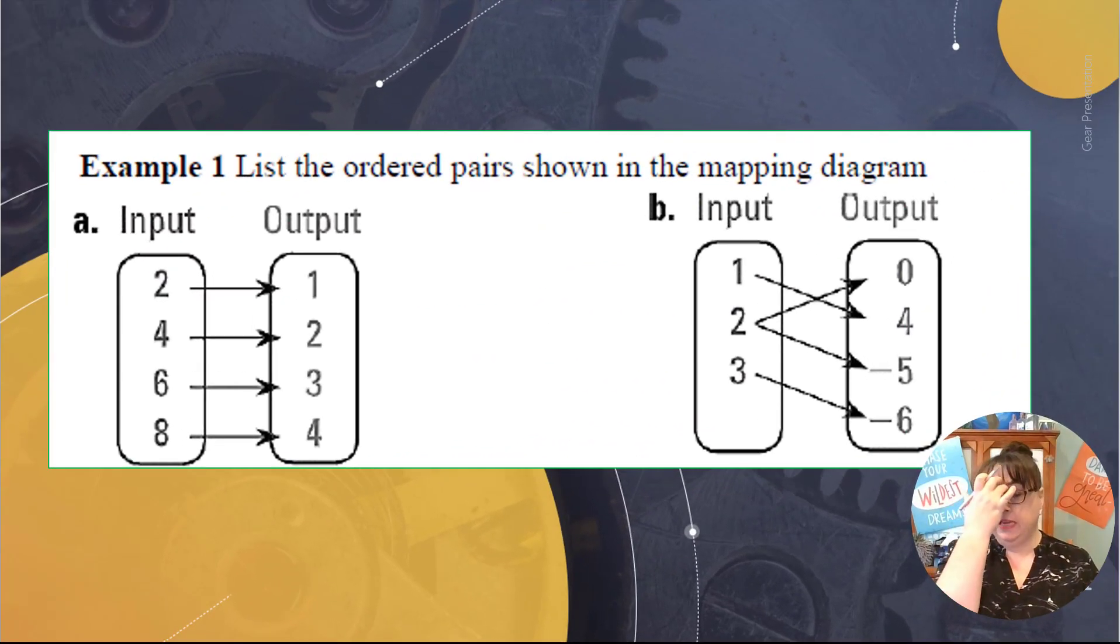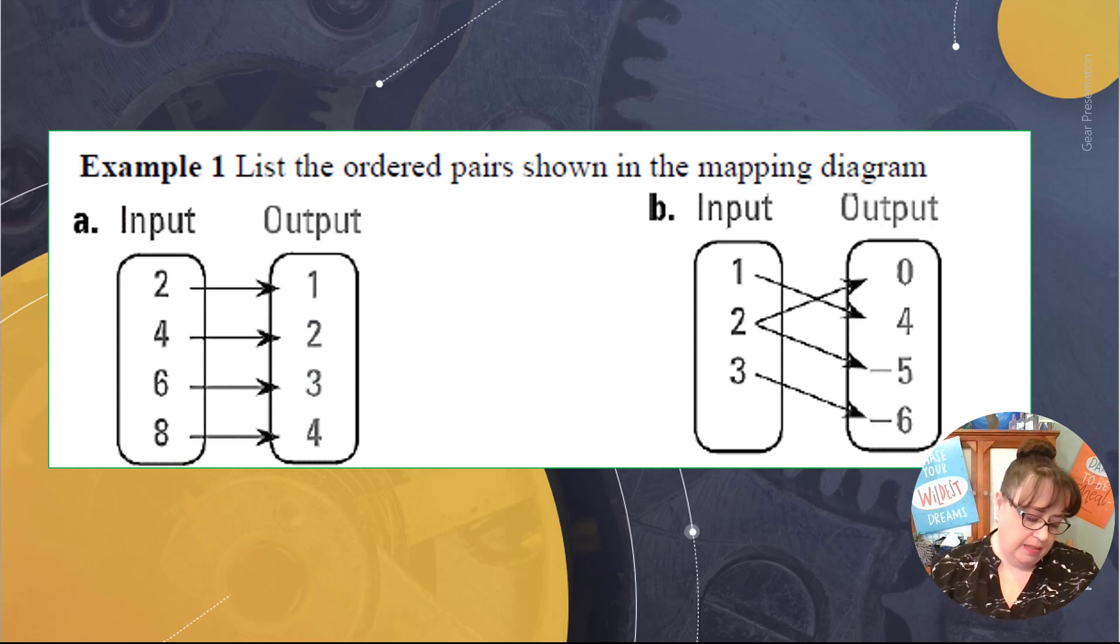So here's our first example that we're going to look at. We have example A, where we have a mapping diagram. So when we have an input and output with arrows like that, that is called a mapping diagram. And what we want to do is we now want to change it into ordered pairs.